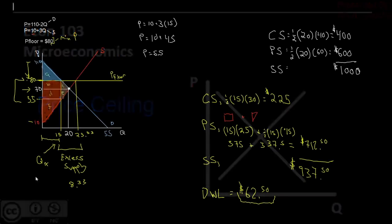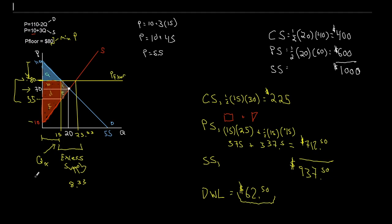Here we see, as promised, all the mess — this is what we were looking at for our price floor, where we have the price floor being put into place. Keep in mind that's our minimum price. I wanted to keep it like this to remind ourselves that a binding price floor is a minimum price set above the market price, with an initial quantity exchanged of 20 and a market clearing price of 70. Our initial surplus: $400 to consumers, $600 to producers, and $1,000 altogether to society. Okay, let's clean up and restart from our initial equilibrium to solve this as a price ceiling.